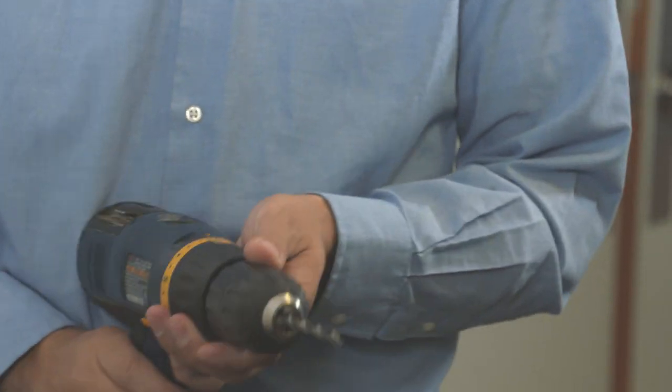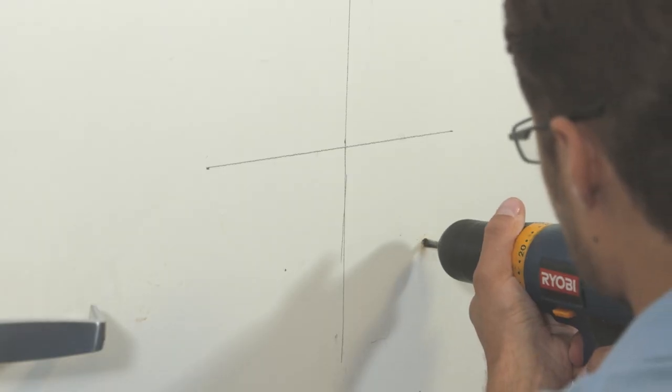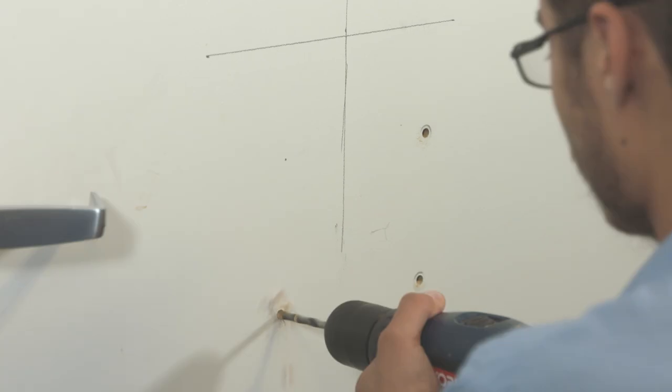Using 1⁄4 inch wood drill bit, drill the four pilot holes marked with the pencil or marker. Drill the entire way through the door.